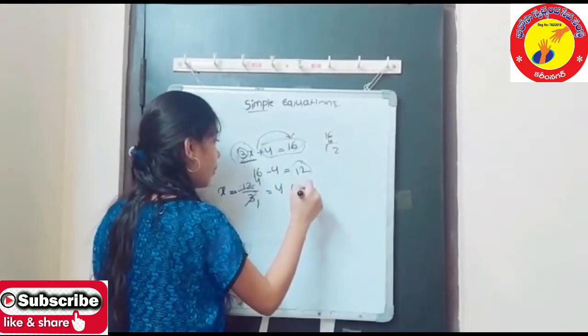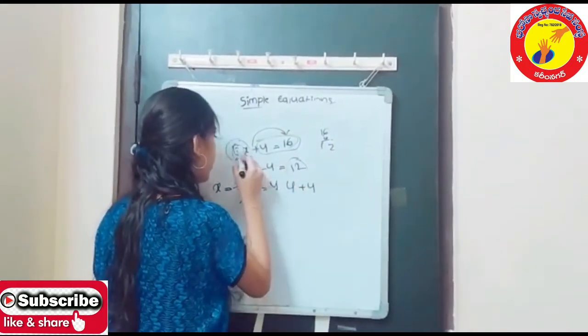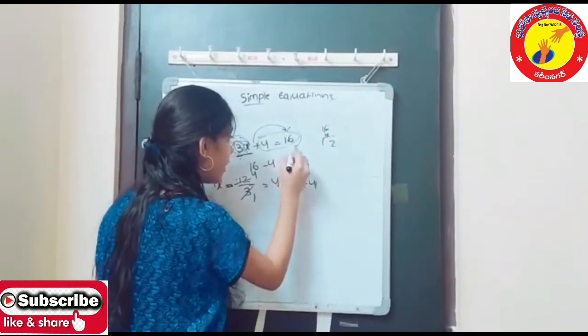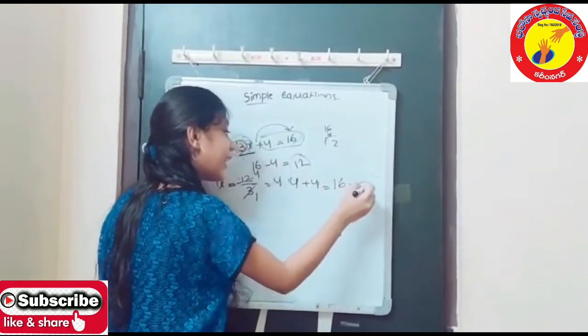The value of X is 4. 3X is 4 times 3, which is 12. 12 plus 4 is equals to 16. We got the correct answer.